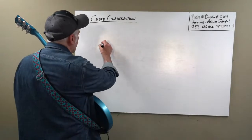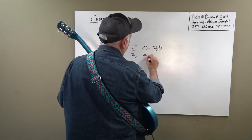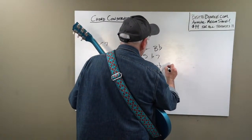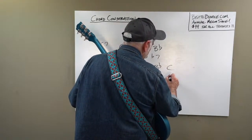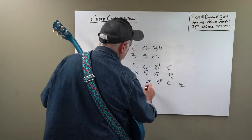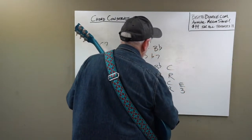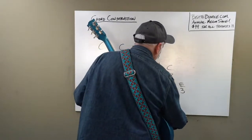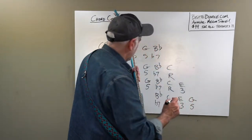If I take a C7 chord — C, E, G, B flat — first inversion has the third in the bass: E, G, B flat, C. Second inversion starts on G: G, B flat, C, E — that's 5, flat 7, root, 3. And then the third inversion — because it's a four-note chord you have three inversions — starts on the flat seven: B flat, C, E, G.